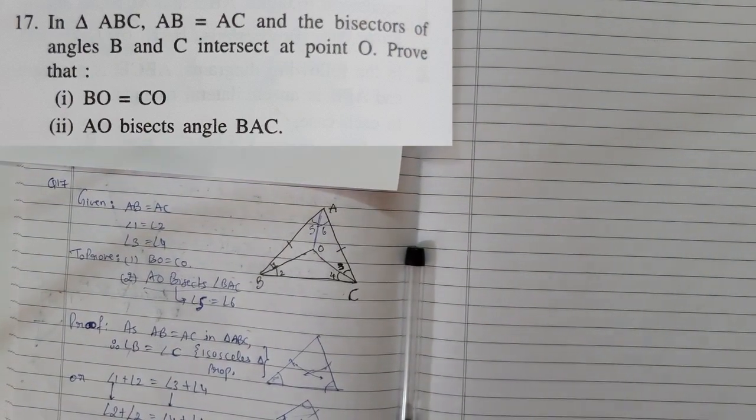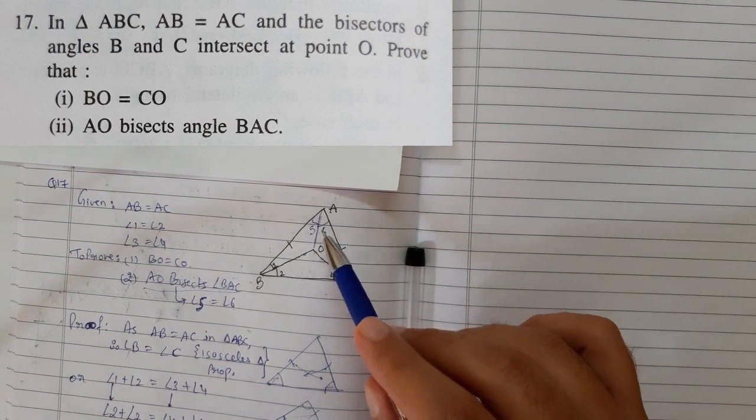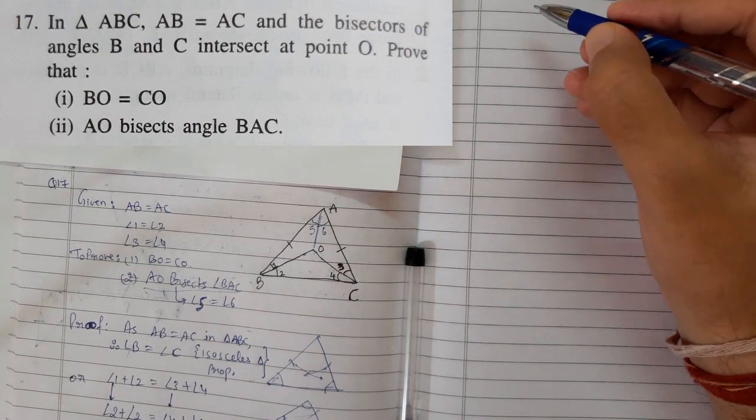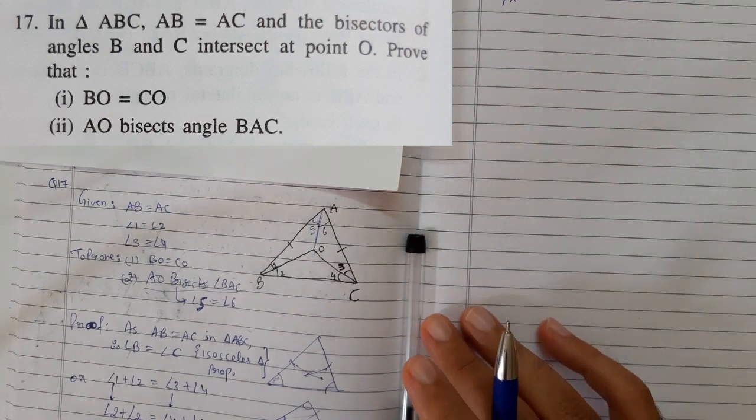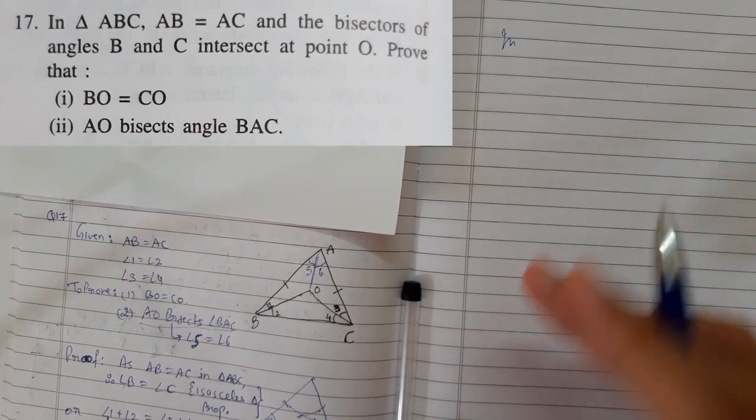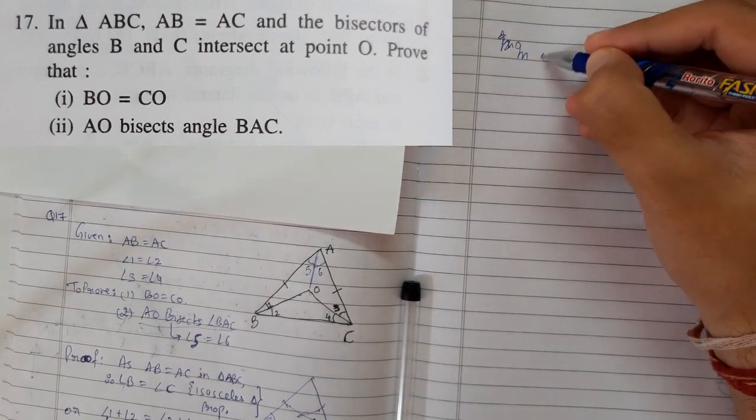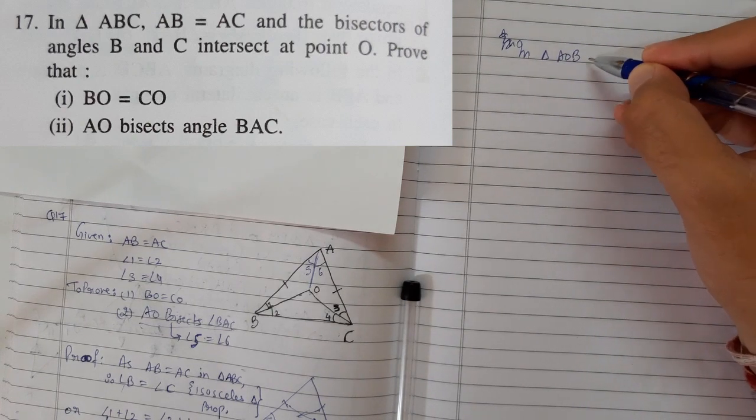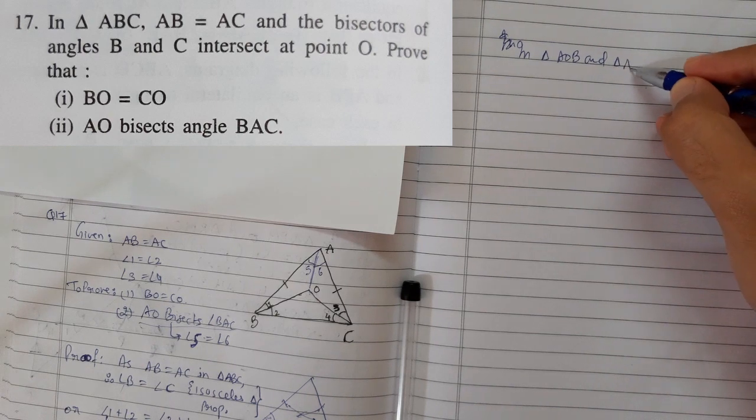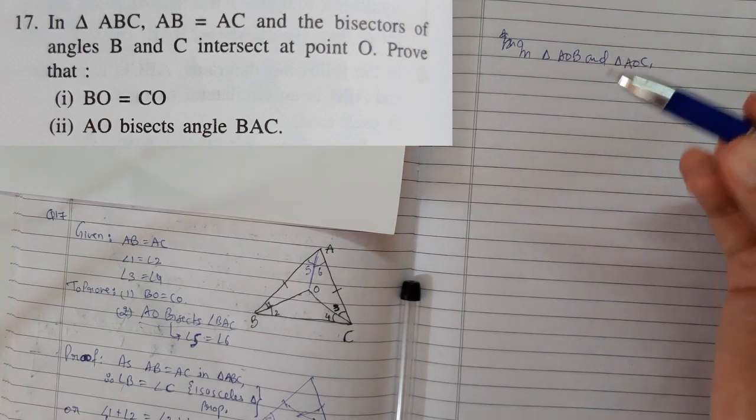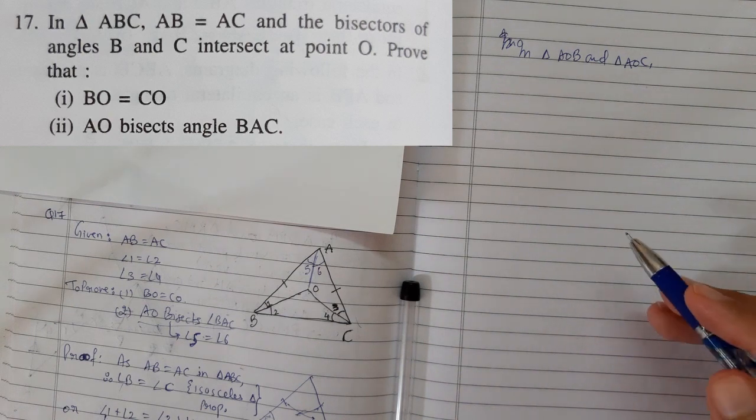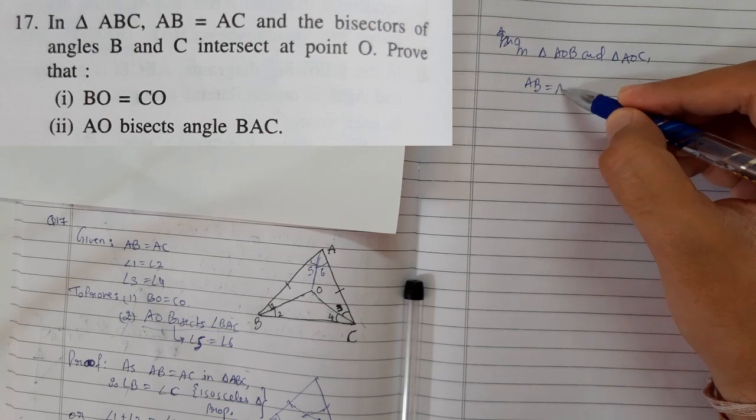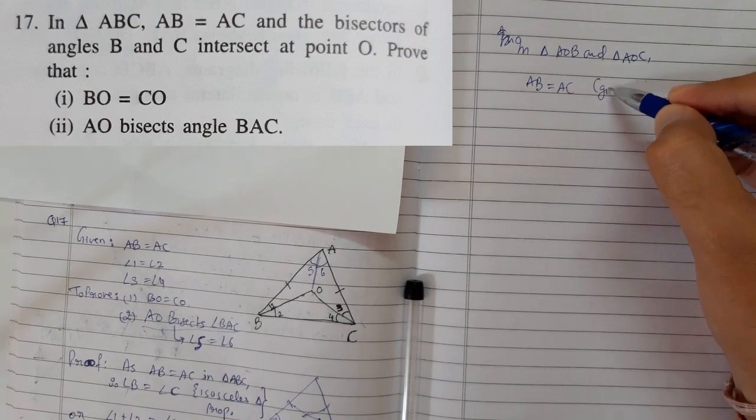In the next part, we need to prove that AO bisects angle A. That means these two triangles we need to prove congruent. In triangle AOB and triangle AOC, first thing AB equals AC. That is very easily given. AB equals AC, which is given.